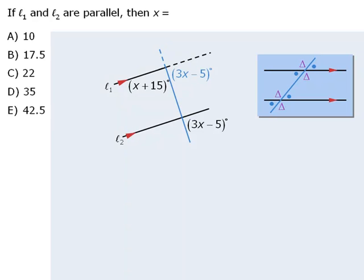From here, we can see that we have two angles on a line, and two angles on a line must add to 180 degrees. So from here we can conclude that x plus 15 plus 3x minus 5 must equal 180.